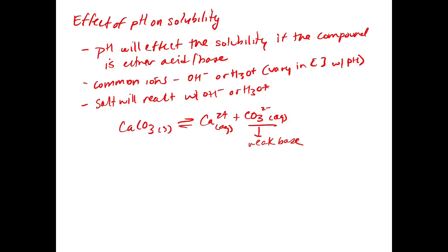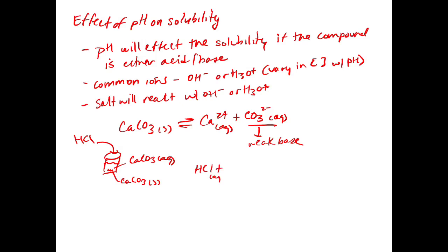If we just do this in neutral water, the carbonate would go into the water, react with the water, and make it slightly basic — pulling protons off the water. Now, what if we were to put calcium carbonate into water with some undissolved solid at the bottom, and then add some HCl? We know from metathesis reactions that HCl plus carbonate gives H₂O plus CO₂ gas, so we'd start to develop bubbles of carbon dioxide.